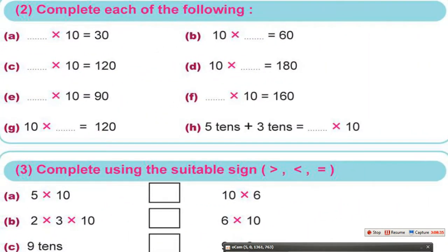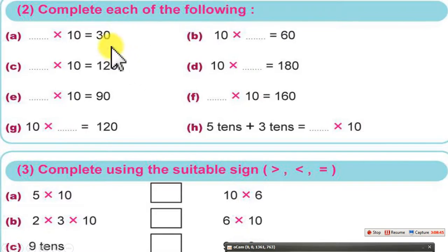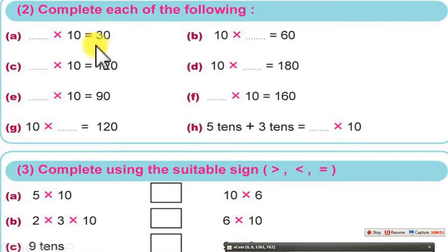Complete each of the following. Which digit, when multiplied by 10, gives a result of 30? If we want to find this digit, cancel the 0 from the result. So the digit is 3. 3 times 10 equals 30.